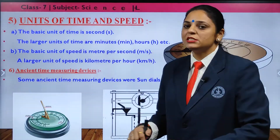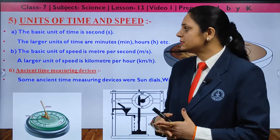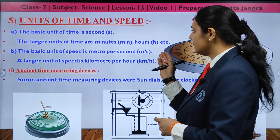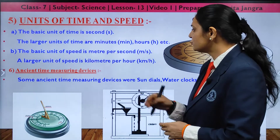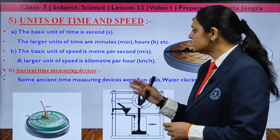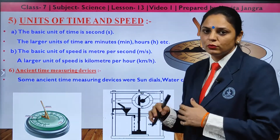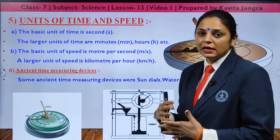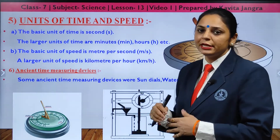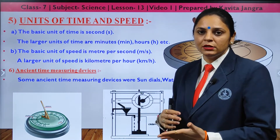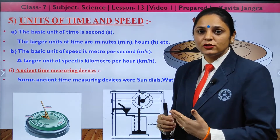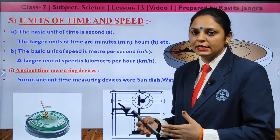The basic unit of time is seconds; larger units are minutes and hours. The basic unit of speed is meters per second; the larger unit is kilometers per hour. For measuring large distances — such as for buses, aeroplanes, and rockets — the appropriate units are used.